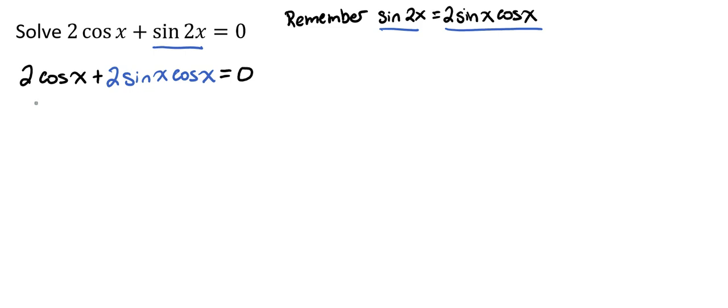Here we've got two terms, and we see that they each have a 2 times the cosine of x, and so we can factor that out. When we do that, that gives us 2 times the cosine of x times the quantity 1 plus the sine of x equals 0.